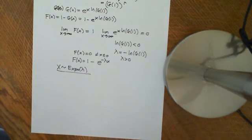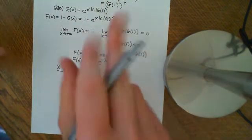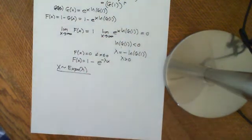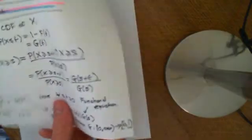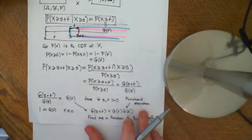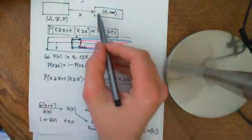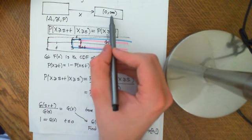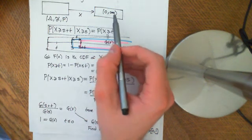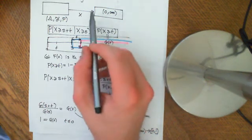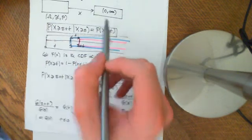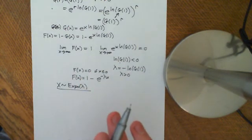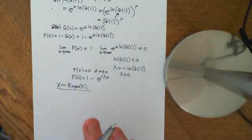So the random variable X is indeed exponentially distributed with parameter lambda if it is memoryless. The reason this is a proof in quotation marks is that we assumed from the beginning that X maps onto the positive real numbers rather than the whole real numbers. If you map onto the whole real numbers and try to prove it, it's a little bit more technical, but on the positive real numbers we definitely have a nice proof.